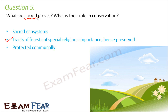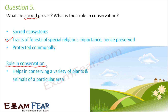Sacred groves are protected communally because that religious belief is held by a particular community, so the community as a whole protects that area. Their role in conservation: even if it is a small or large tract of land, at least something is getting conserved. It helps in conserving a variety of plants and animals of a particular area. Even if the rest of the forest got cut down, at least some part of it could be preserved, helping the ecosystem in some way.